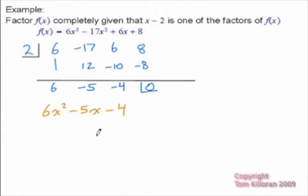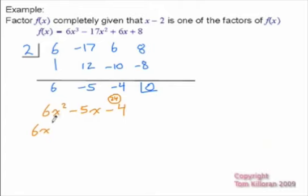All we have to do is factor this polynomial. To factor this, we're going to multiply the first and the last, which would give us 24. We're looking for factors of 24 that subtract up to negative 5, which would be 8 and 3. So I'm going to separate this as 6x squared, then an 8x, then a 3x to give us that 5x, and then minus 4.